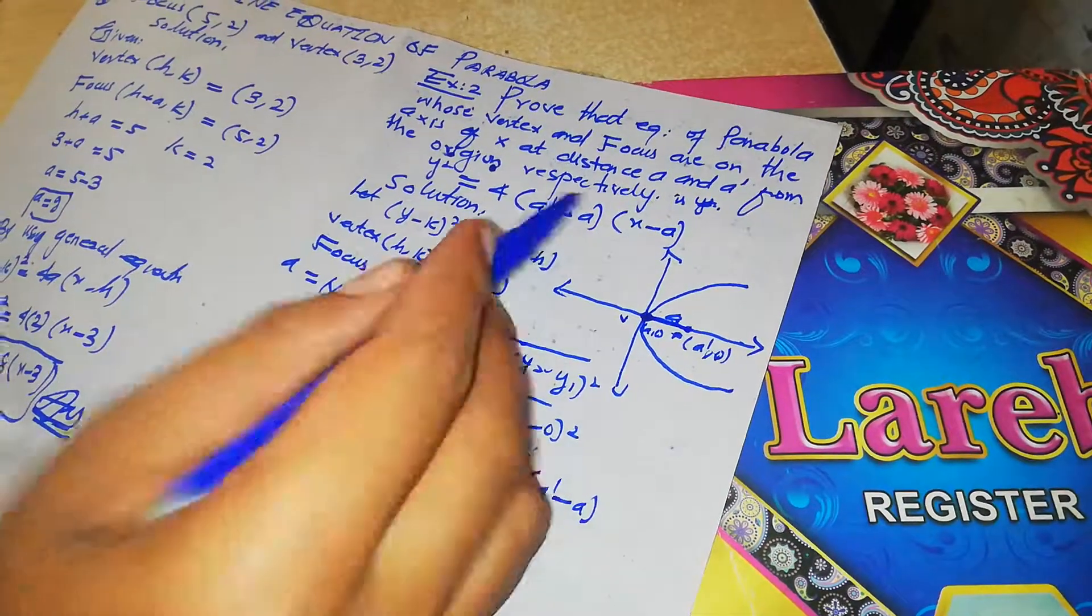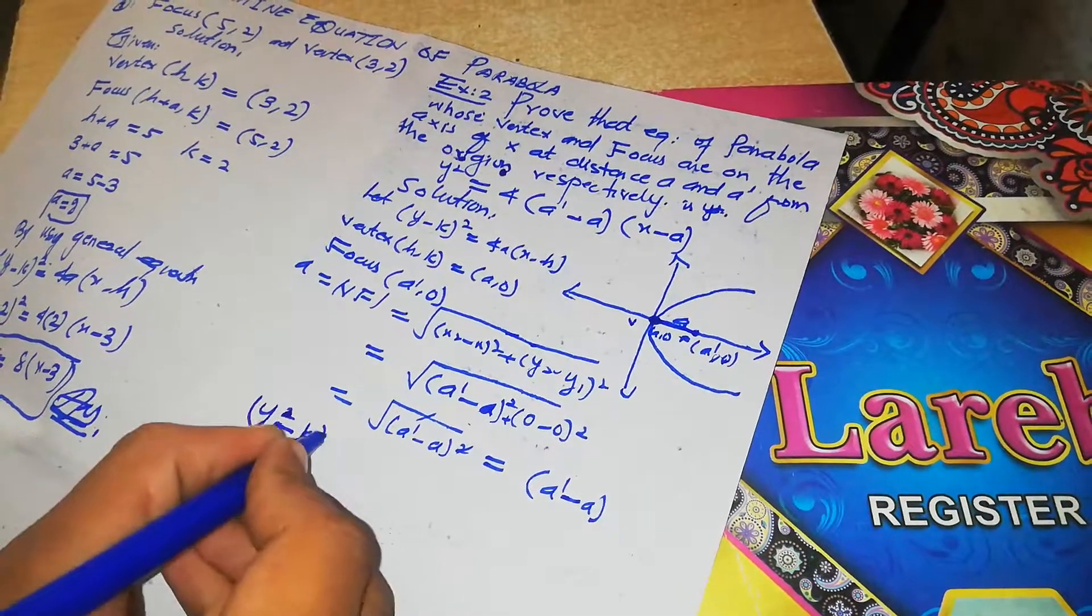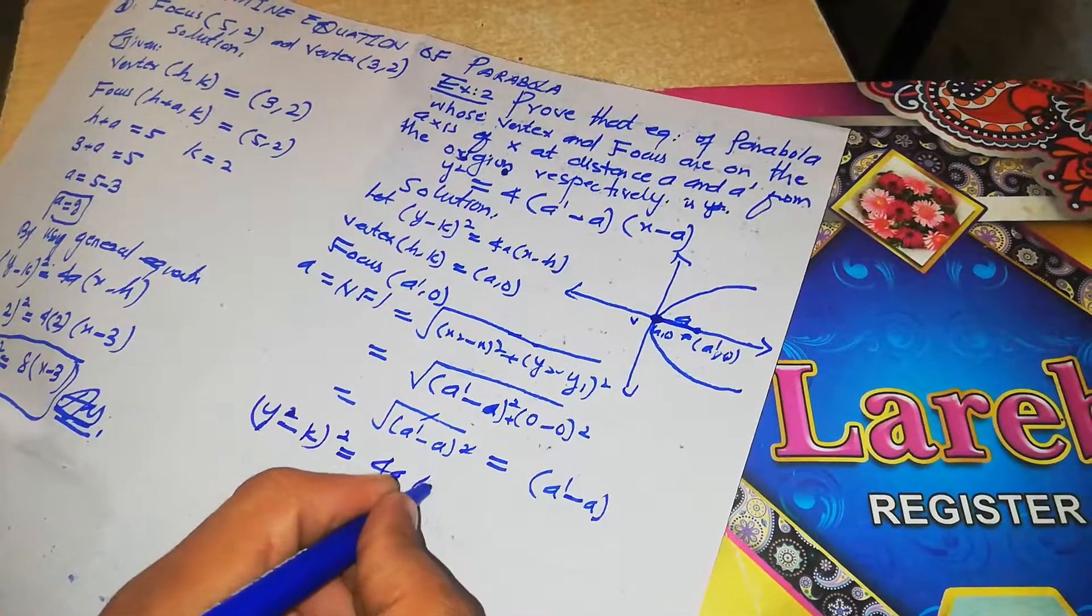Now here we will put the values. The general equation is (y minus k) whole square equals 4a(x minus h). Now y minus k, what is the value of k? The value of k is 0, whole square, equals 4a.